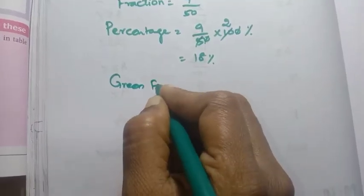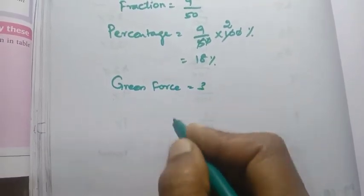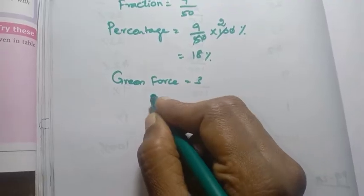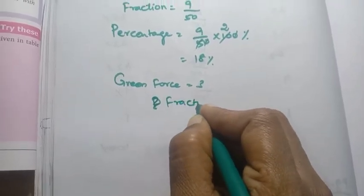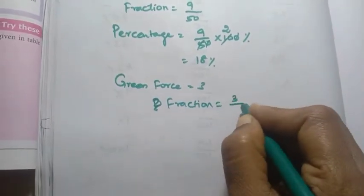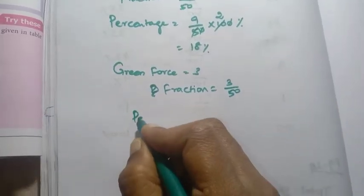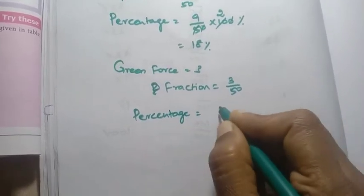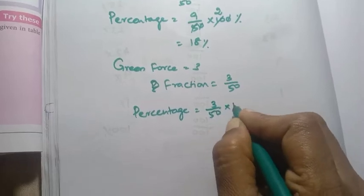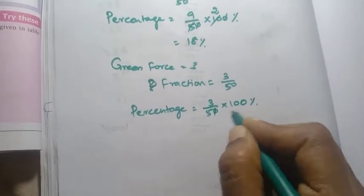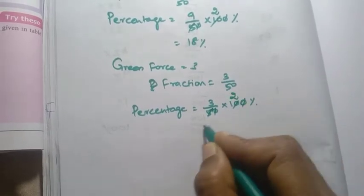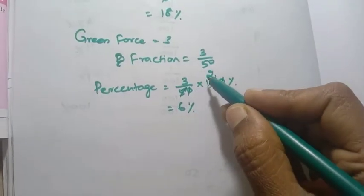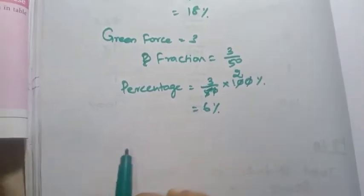Green Force: 3 students involved. Fraction = 3 by 50. Percentage = 3 by 50 into 100. Cancel zeros: 5 twos are 10, 3 twos are 6 — so 6 percentage.